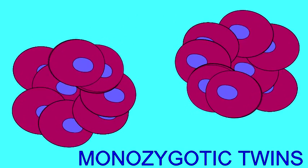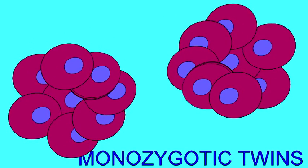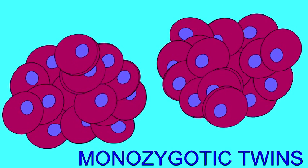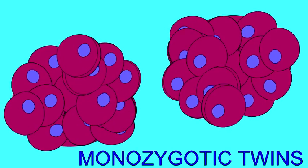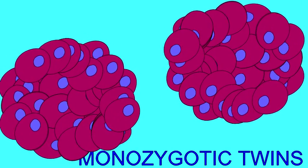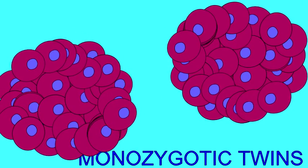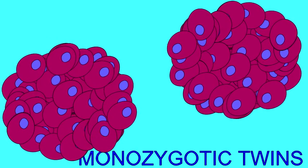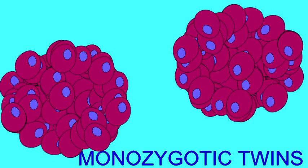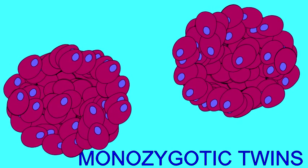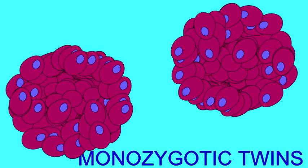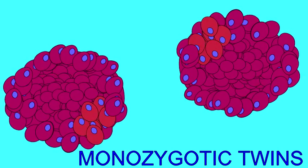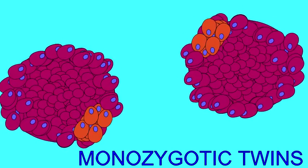So it can come to pass that two separate individuals are formed from one single zygote, and thus monozygotic twins, if the cells of the early embryo break apart from each other and implant in two separate regions of the uterine lining. This is how monozygotic twins are formed.